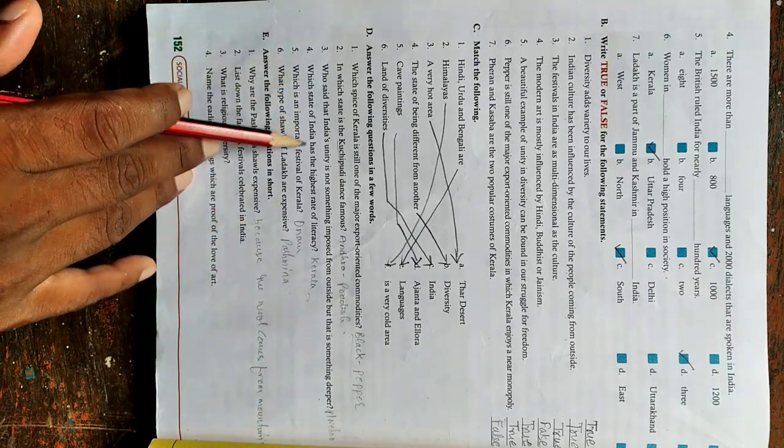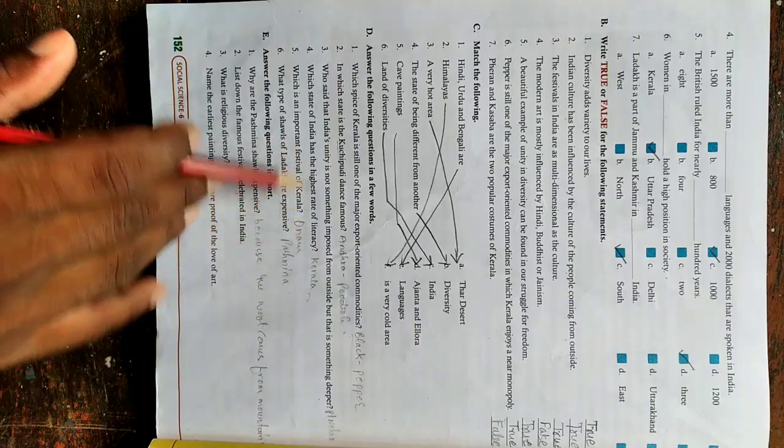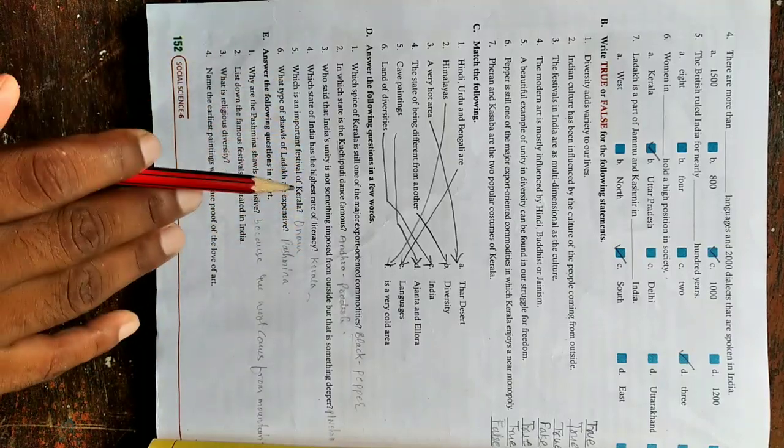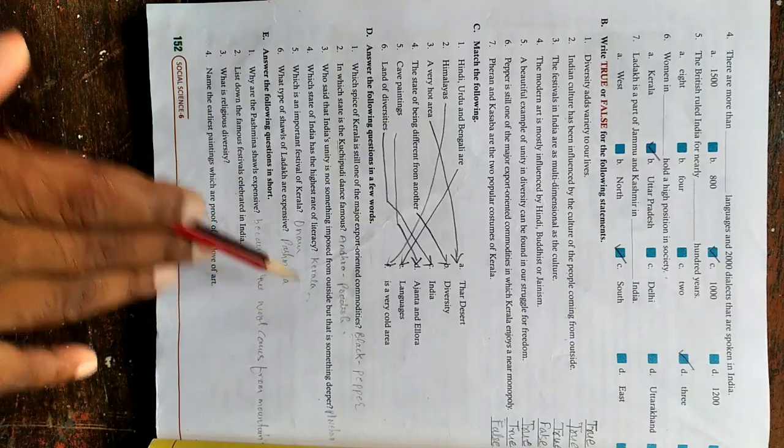Fourth question, which state of India has the highest rate of literacy? Bharat ka kaun sa rajya sabse jyada sakshara hai? Kerala is the correct answer.